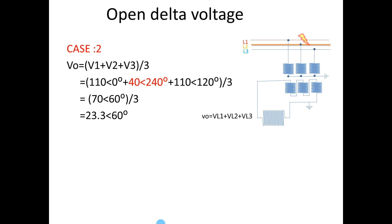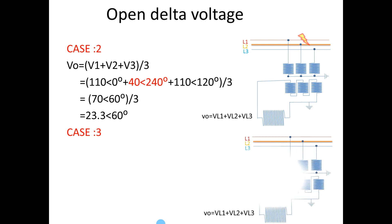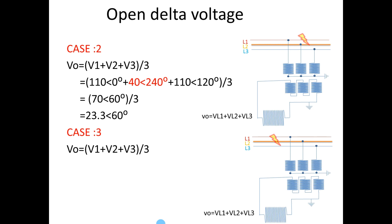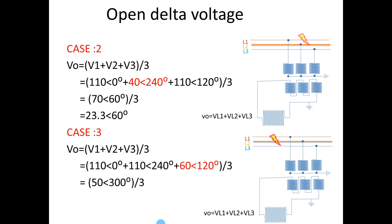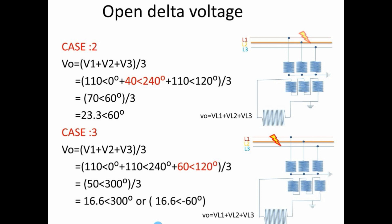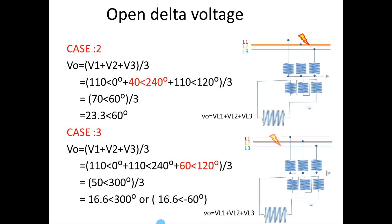Now I go for Case 3. Let us consider the fault on B phase. During this time, depending on the fault on B phase, the B phase voltage will get dropped. Let us consider the voltage on B phase is 60V. After making the calculation, the open delta voltage we get is 16.6V at 300 degrees or minus 60 degrees. We will note down all three phase voltages with angles.